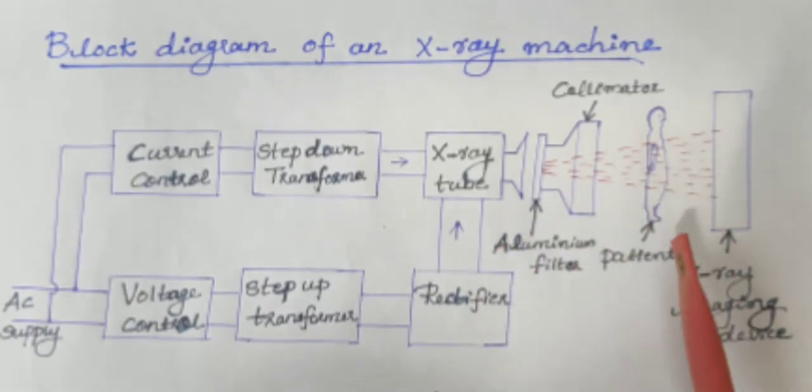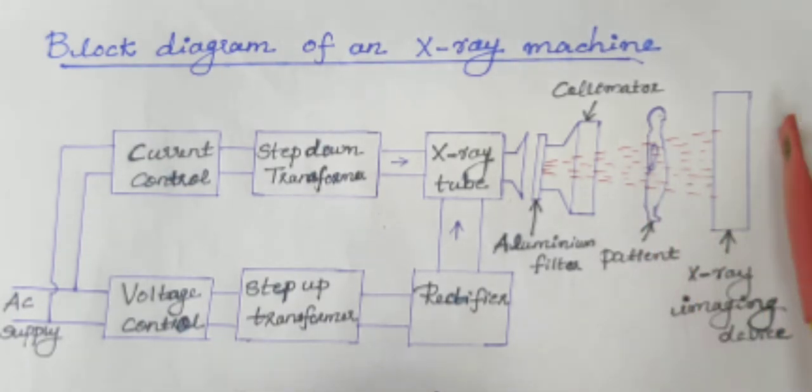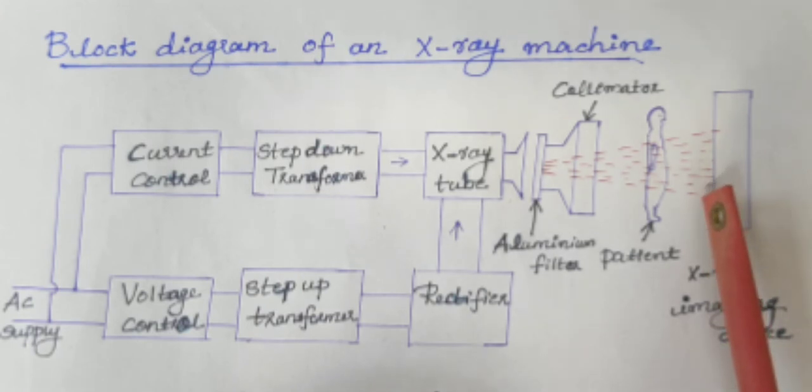Next is the x-ray imaging device. The beam after passing the parts to be examined strikes a fluorescent screen. The fluorescent material emits visible light when the x-ray beam strikes and as a result image becomes visible.